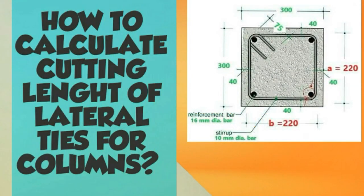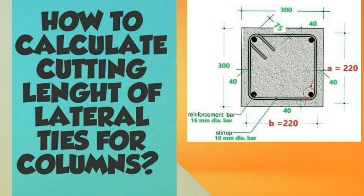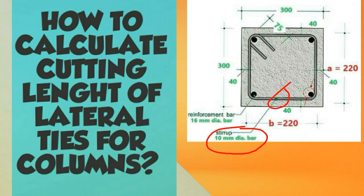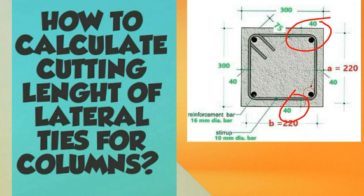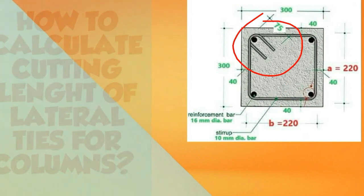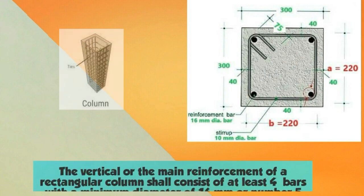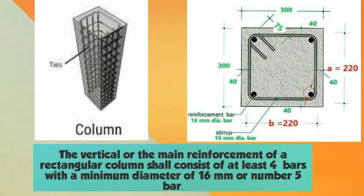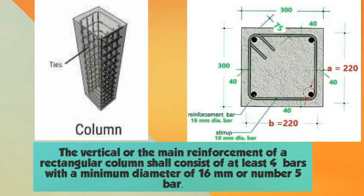Let's take for example a cross-section of a column having a dimension of 300 millimeter by 300 millimeter. The main reinforcement bars are four pieces 16 millimeter diameter bar, and the lateral ties is 10 millimeter diameter bar. Concrete cover is 40 millimeter and hook length is 75 millimeter. Now let's discuss first the ACI codes connected to this column.